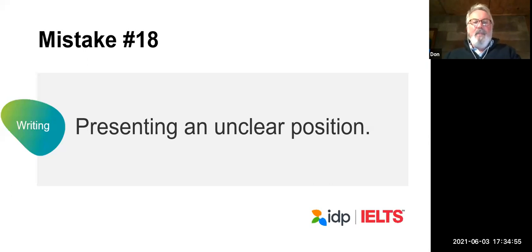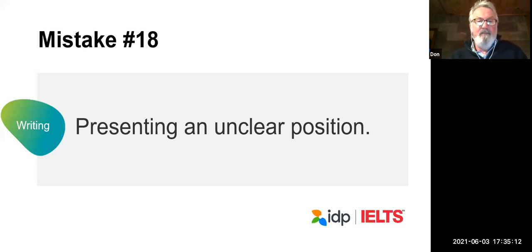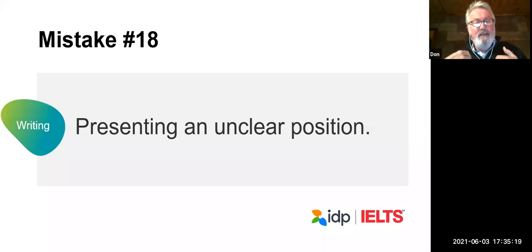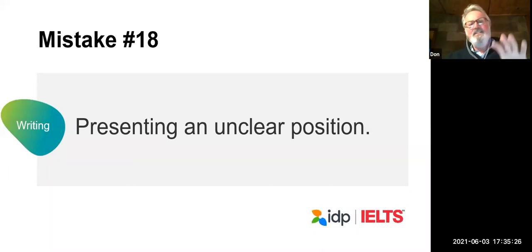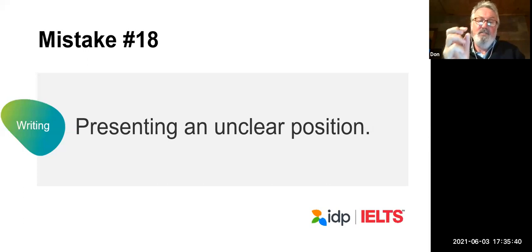Mistake number eighteen: presenting an unclear position. This happens a lot in task two writing. One of the assessment criteria is that a clear position is presented — meaning what you think. Don't say 'there are many sides to this question' or 'this is a big problem' without saying what you think. Use 'I think,' 'I believe,' 'in my opinion' in your task two essay, because that is what the examiner is looking for.